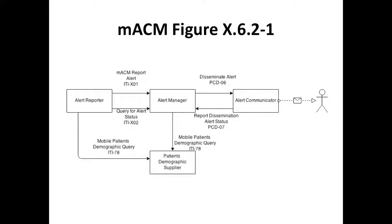Everything so far has been about health workers, but we can also have a very similar diagram where, instead of the Care Services Info Manager, we look at a patient demographic supplier — essentially a client registry — which has information about subjects of care. In this case, we've identified the PDQm transactions for querying demographic information on clients, though straight-up PDQ or other options could also be used. The Alert Reporter can query the patient demographic supplier to identify a cohort of patients, while the Alert Manager uses that same transaction to determine the contact information.